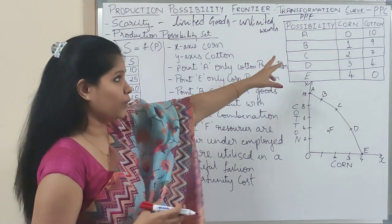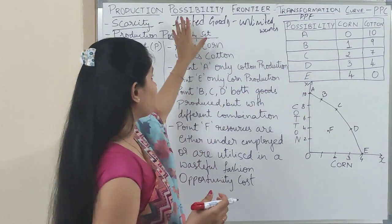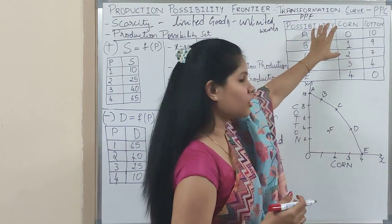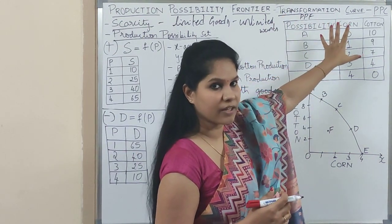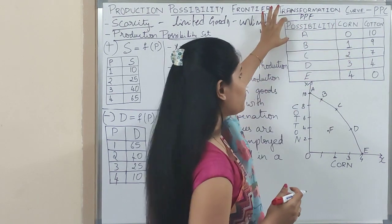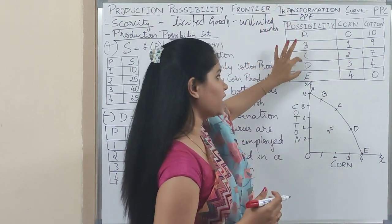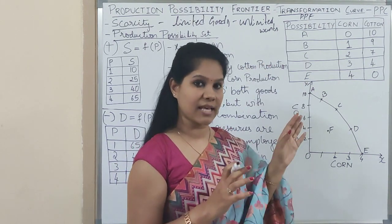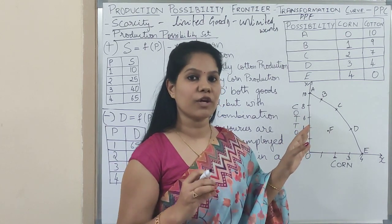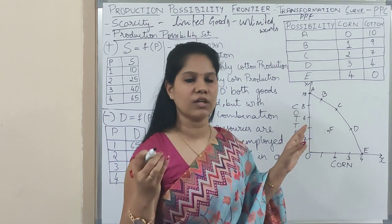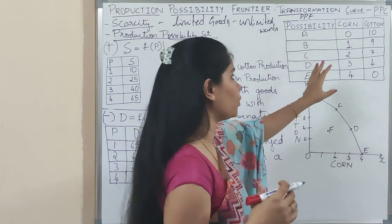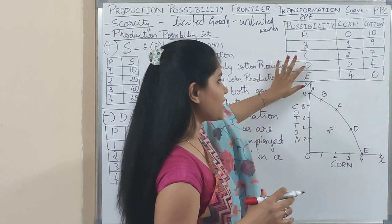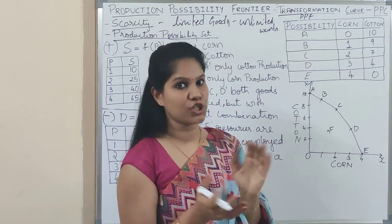Right now you can see a table on screen. Before explaining the exact concept, let me go with the table. For the possibility curve, we have many possibilities: A, B, C, D, E. I am taking the same example from the textbook so it doesn't confuse you — it is already available in your textbooks. These are the different combinations you can go with.